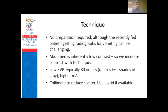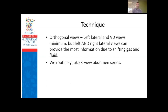We counteract low kVp with higher MAS and good collimation. Emergency clinicians often do a 'chabdomen' to get the most information, but realize the bigger the field of view, the more scatter and the less detail. If you compare a thorax-abdomen series to a collimated abdominal series in the same case, there's much better serosal detail in the collimated series — especially important in big dogs. Use a grid when available. For orthogonal views, left lateral and VD are the minimum; ideally take three views — left lateral, right lateral, and VD — to get shifting gas and fluid highlighting structures you might otherwise miss.